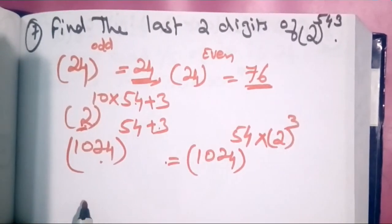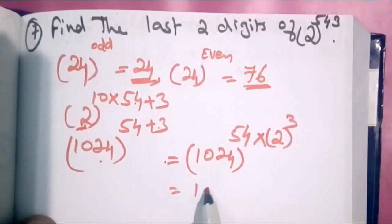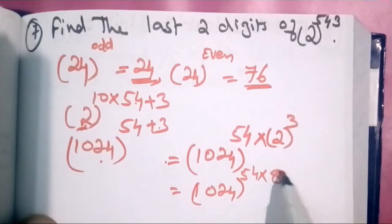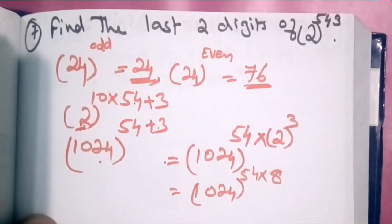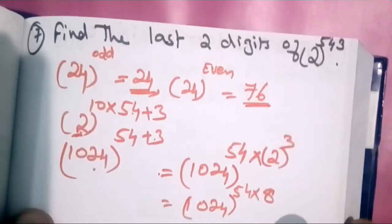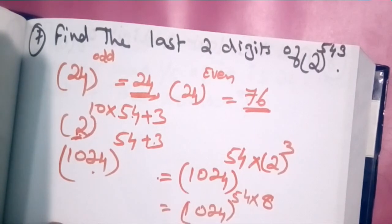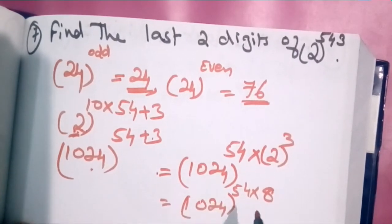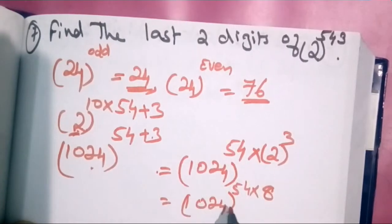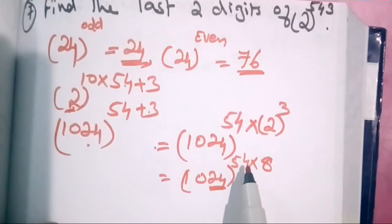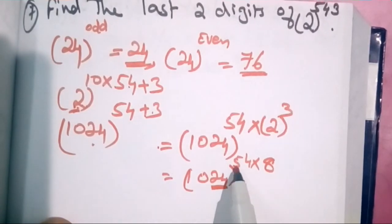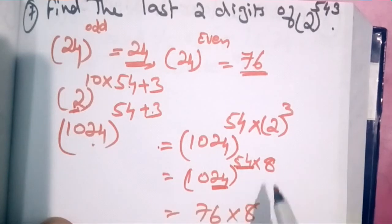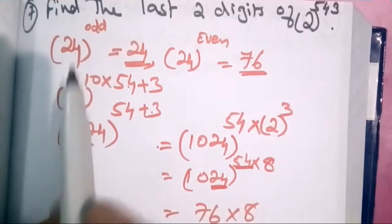If you want to add 10 into 54, we will compute 10 into 54 into 3. This gives 54 into 54. We add 10 into 54 into 54 into 3. The even number is 24, so it is 76. Into 8.